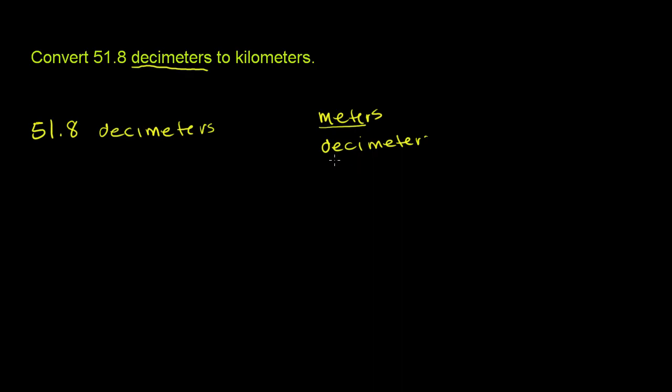Now, one meter is how many decimeters? Well, the prefix deci means one-tenth. So one decimeter is one-tenth of a meter, or another way of thinking about it is there are 10 decimeters for every meter. This is a smaller unit. 10 of these make up one of these. Or one-tenth of a meter per decimeter, which is exactly what that is telling you.